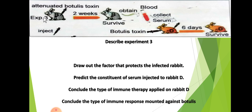Now, Experiment 3. We have Rabbit B, and we inject it with attenuated bottlis toxin — a vaccine. After two weeks, it survived.